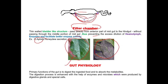Finally, regarding gut physiology: the primary function of the insect digestive system is to digest the ingested food and to absorb the metabolites after food digestion. The digestion process in insects is enhanced with the help of enzymes and microbes, which are produced by digestive glands and special cells present in the digestive system.